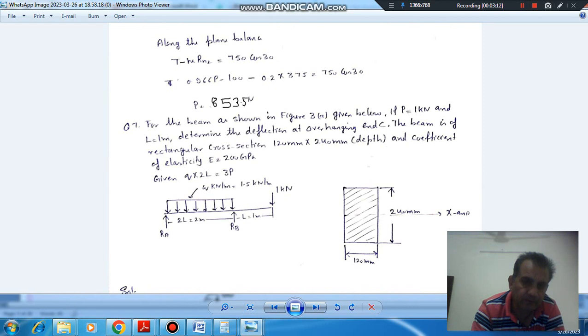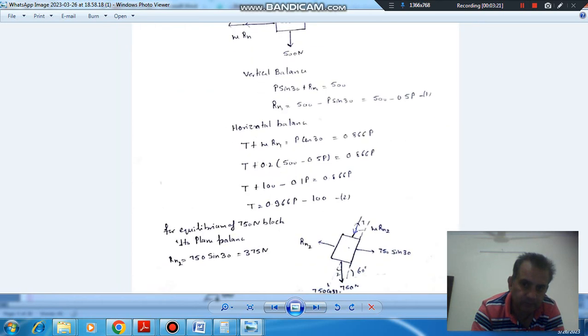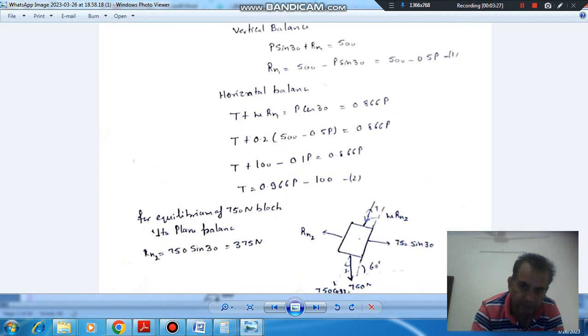Along the plane is T minus mu R_N2 equal to 750 cos 30. Along the plane is T in upper direction, mu R_N2 in downward direction, and 750 cos 30 in downward direction.